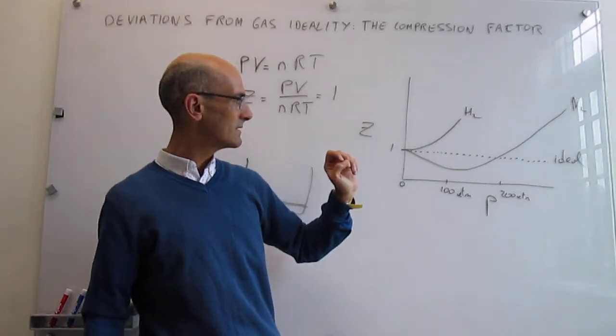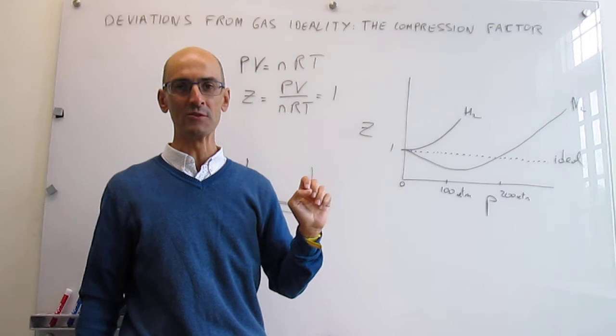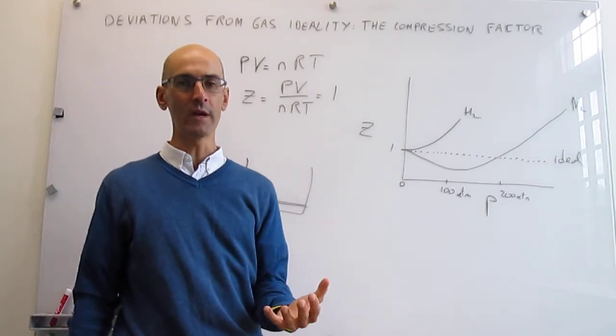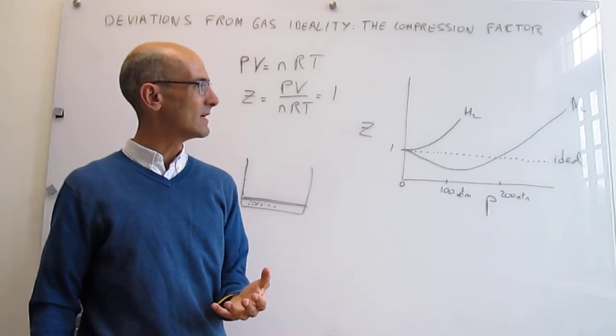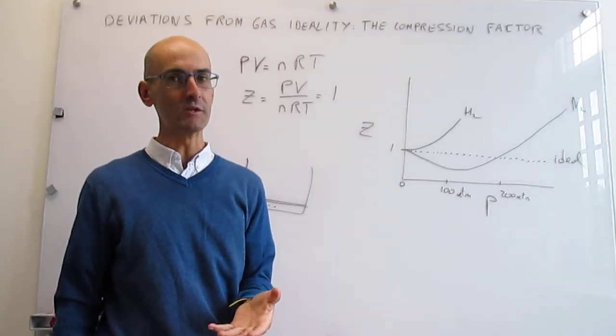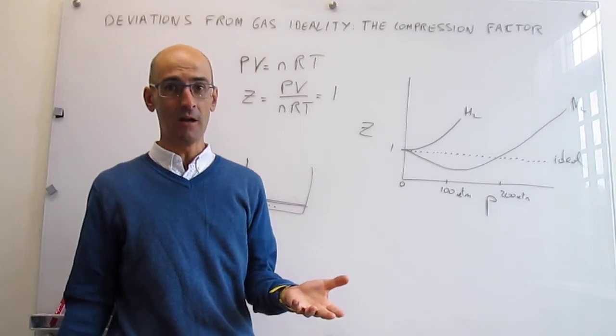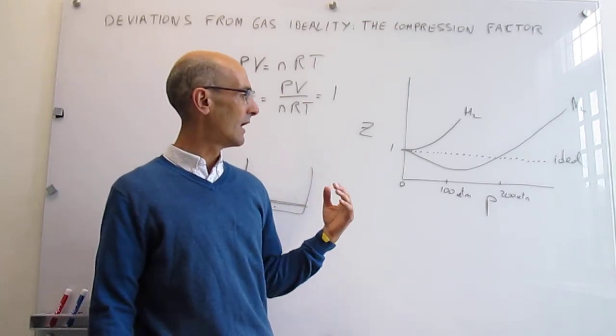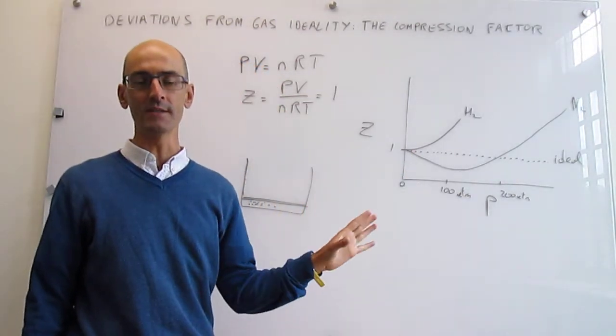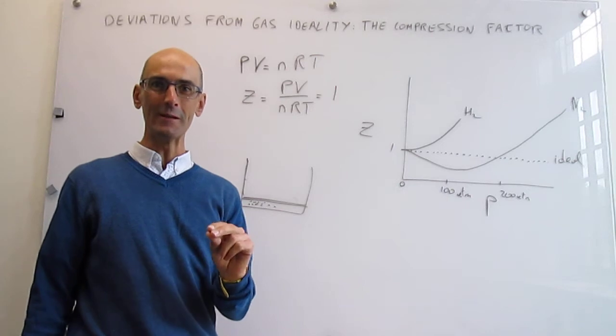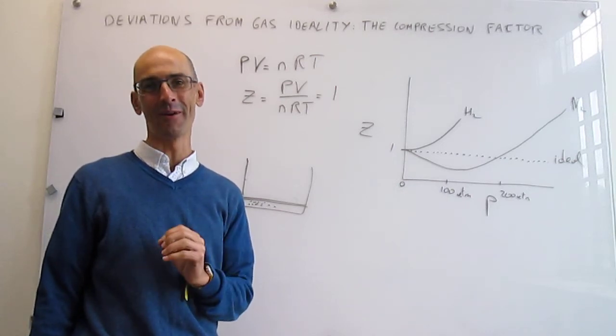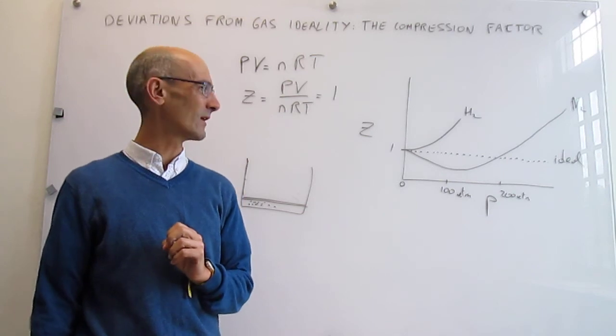Now in H2, repulsions dominate at 298 Kelvin throughout the pressure range, and that means the attractions between H2 molecules must be very small because they're completely overwhelmed by repulsions at all pressures. So this type of graph, this study of gases, really informs about the strength and type of interactions between gas particles.